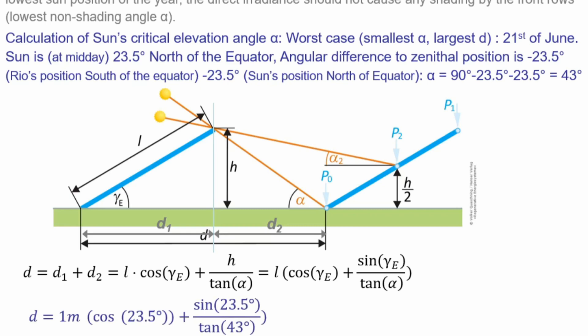So this is one meter. We say it's a length that we've mounted now horizontally. Cosine of 23.5 degrees plus a sin of 23.5 degrees divided by tangent of 43 degrees. That's then 1.345 meters. That's our distance.